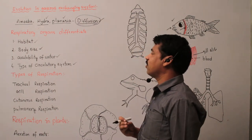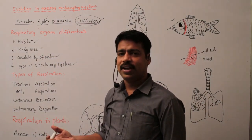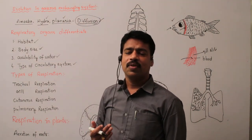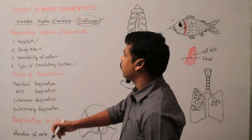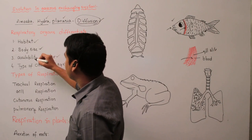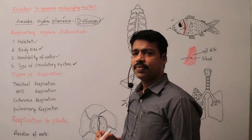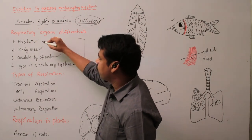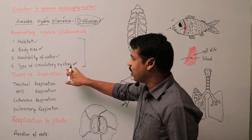The respiratory organs are differentiated based on the habitat of the living organism. Some organisms live in water — those are aquatic organisms — and some are terrestrial organisms. Both show different kinds of gaseous exchange systems. The respiratory organs are differentiated on the basis of habitat, body size, availability of water, and type of circulatory system.